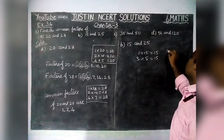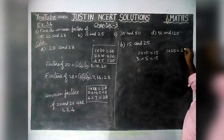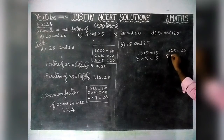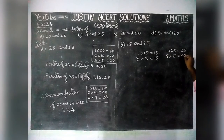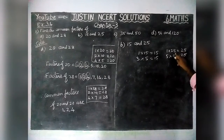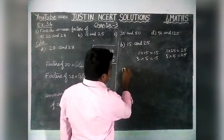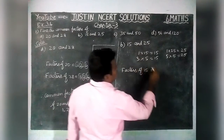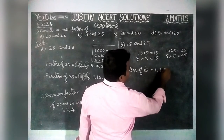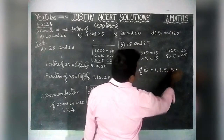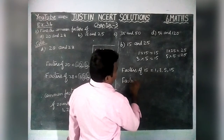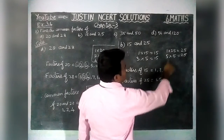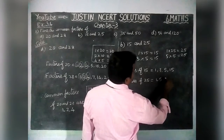Next, 1×25 is 25, 2 will not come, 3 also will not come, 4 will not come, 5×5 is 25, and we don't have any other number. So factors of 15 are equal to 1, 3, 5 and 15. Factors of 25 are equal to 1, 5 and 25.